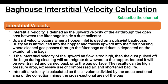Interstitial velocity is defined as the upward velocity of the air through the open area between the filter bags inside a dust collector. Upward velocity occurs when a hopper inlet is used on a pulse jet bag house. Dusty air is introduced into the hopper and travels upward into the filter housing, where cleaned gas passes through the filter bags and dust is deposited on the exterior of the bags.